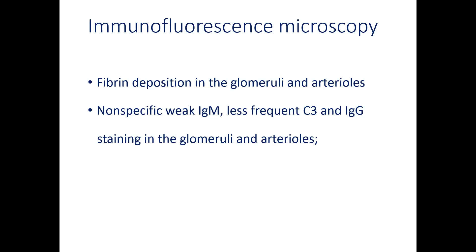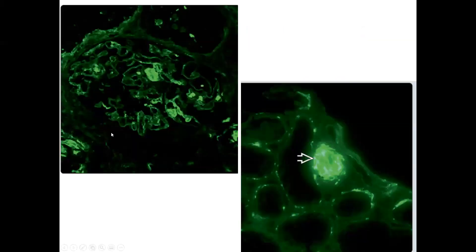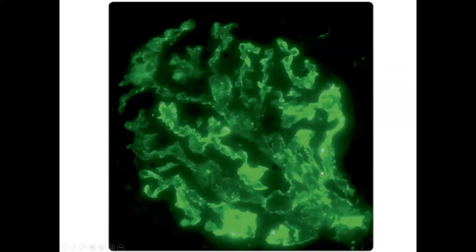On immunofluorescence, fibrinogen stain will highlight fibrin in the capillary lumen and arterioles. There may be some nonspecific weak IgM staining; less frequently, IgG and IgA can be seen in glomeruli. If the fibrinogen stain shows fibrin in both the lumen and wall including arterioles, it confirms TMA. If there is significant staining for IgG or IgA, we should consider primary glomerular disease occurring along with thrombotic microangiopathy.